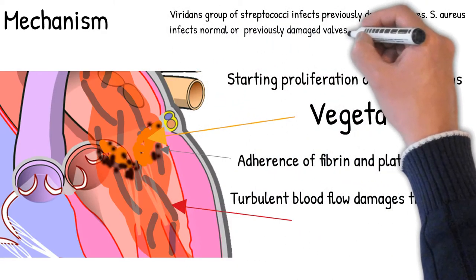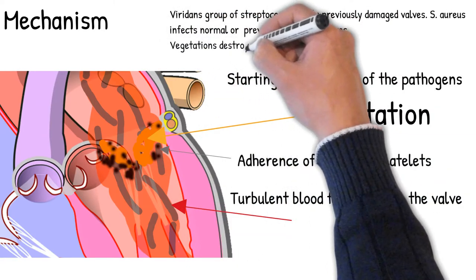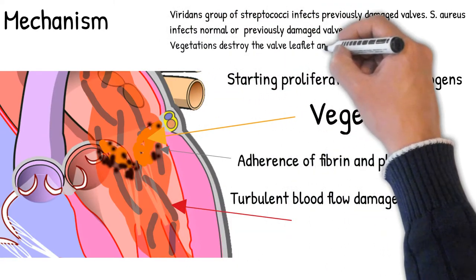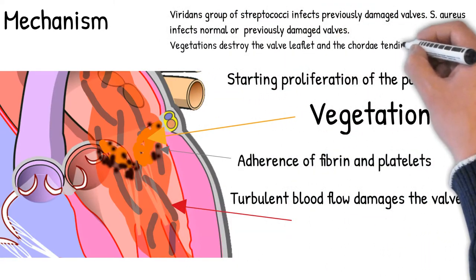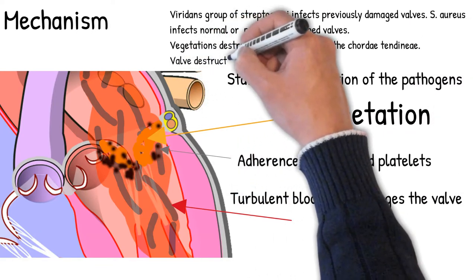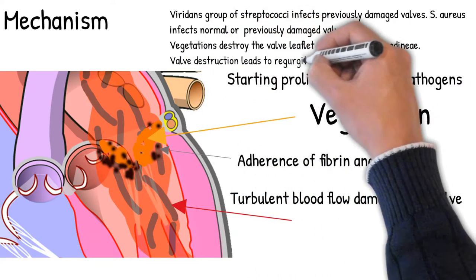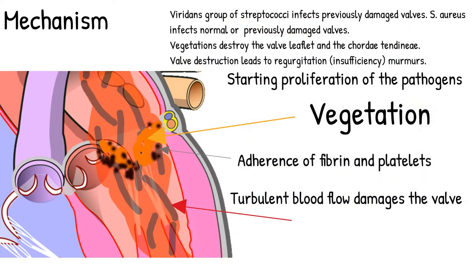Vegetations destroy the valve leaflet and the chordae tendineae. Valve destruction leads to regurgitation, insufficiency, and murmurs.